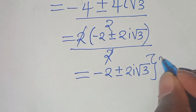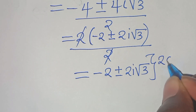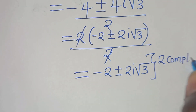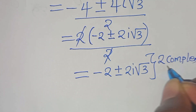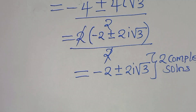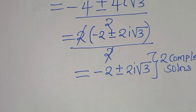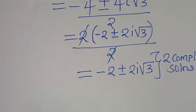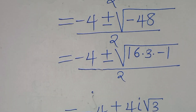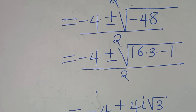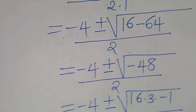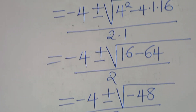These are again 2 complex solutions under case 2. So in total, we have 6 solutions: 2 real solutions and 4 complex solutions.